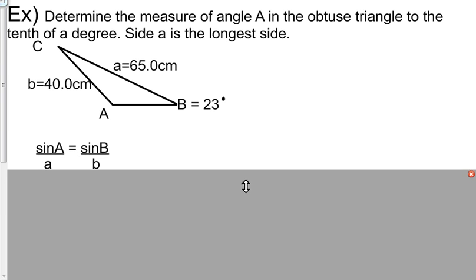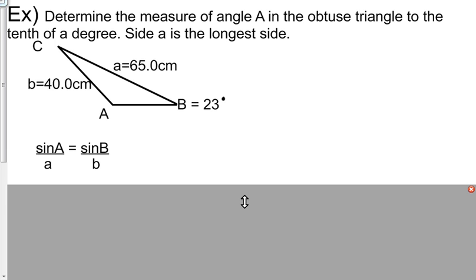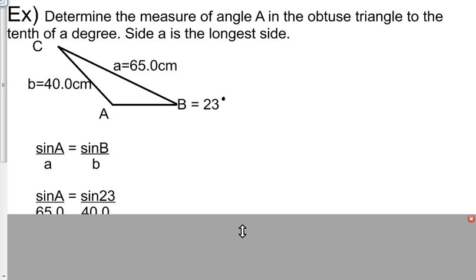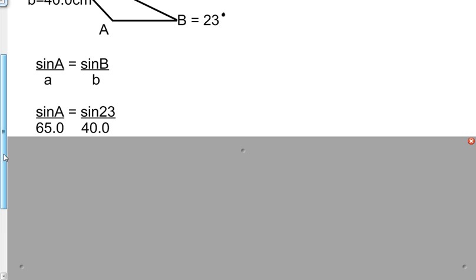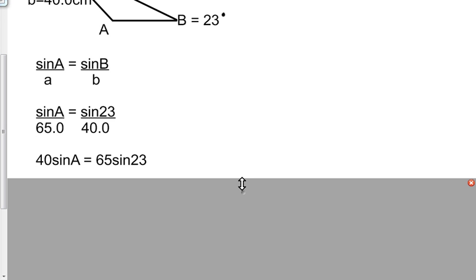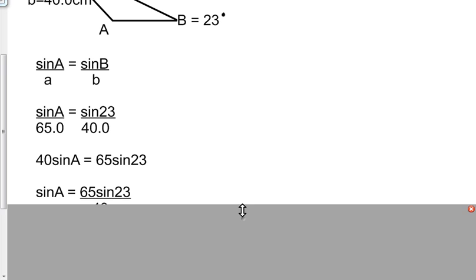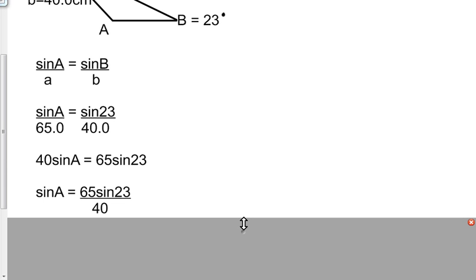I'm going to use the sine law, so sine A over a equals sine B over b. I can plug in what I know and get sine A over 65 equals sine 23 over 40. Cross multiply to get 40 sine A equals 65 sine 23.